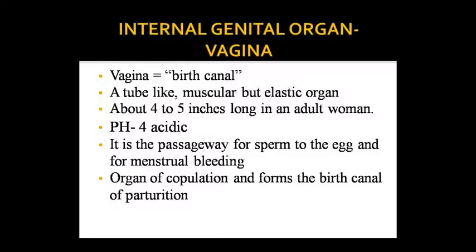The vagina has an acidic pH of about 4. It provides a pathway for sperm to reach the egg. It also allows the fetus to pass through during birth, which is why it is called the birth canal for parturition. Sperm travel through the vagina to reach the egg, and menstrual bleeding also exits externally through this pathway. It is a copulation organ and also creates a birth canal during parturition.